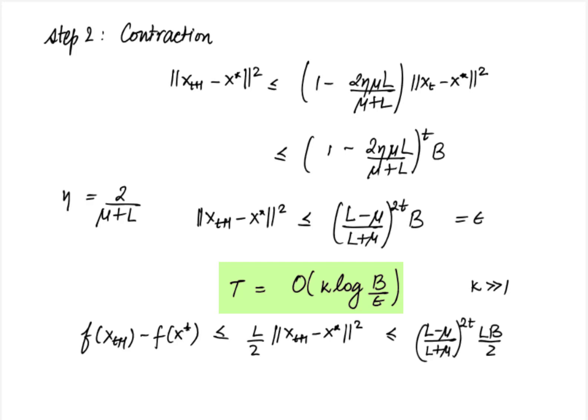Another remark is that the oracle complexity can also be derived if instead of choosing eta to be constant we use the backtracking line search. So that proof we will not cover here and I will leave it as an exercise for you.